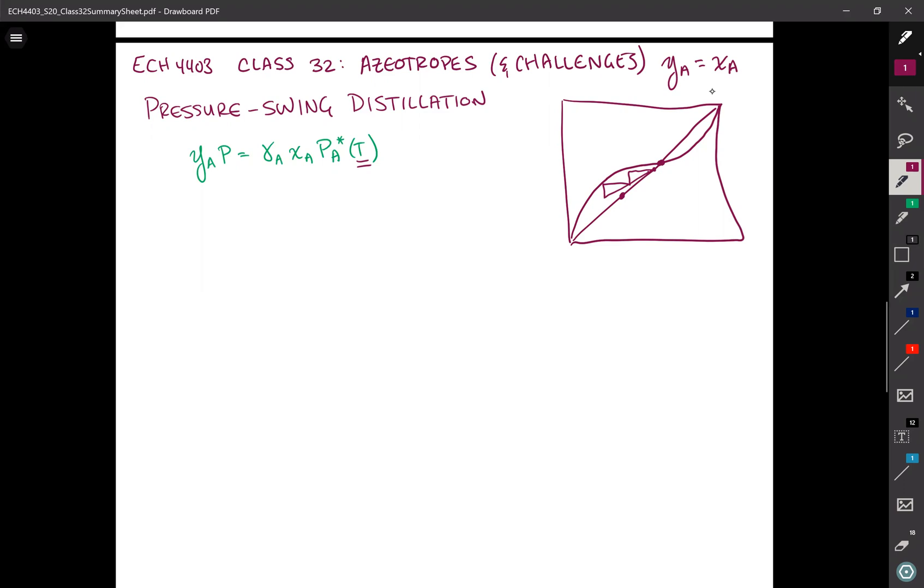However, in this equation, there's also another variable, which is pressure. By adjusting pressure or temperature, we can tune equilibrium compositions to what we desire.